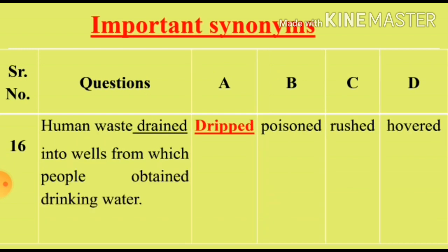Question 16: 'Human waste drained into wells from which people obtained drinking water.' We will see the synonym for the word 'drained'. Option A: Drip (katra katra behna). Option B: Poisoned (zehrilla). Option C: Rushed (bhagna). Option D: Hovered (chupa hua). Option A, Drifted (andar girna), is the right synonym for the word 'drained'.